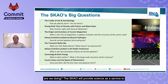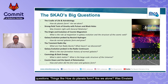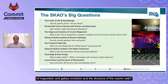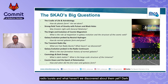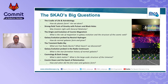The SKAO will provide science as a service to astronomers and physicists around the world to help answer big questions: how do planets form, are we alone, was Einstein right with the theory of general relativity, what is the role of magnetism in galaxy evolution and the structure of the cosmic web, how do normal galaxies form and grow, what are fast radio bursts and what haven't we discovered about them yet, dark energy, dark matter, and the cosmic dawn and epoch of reionisation?